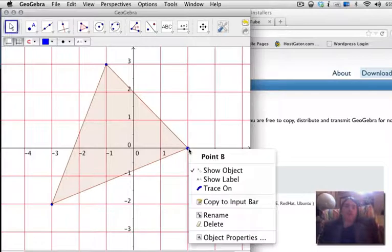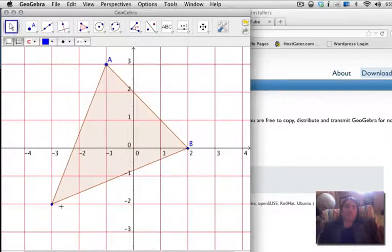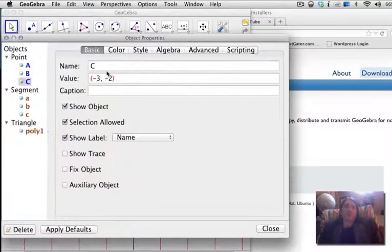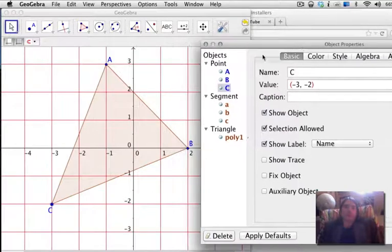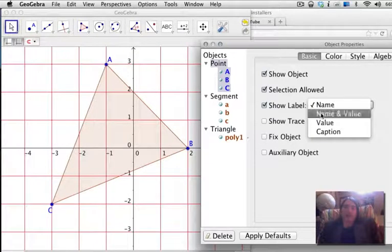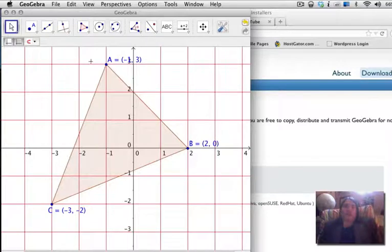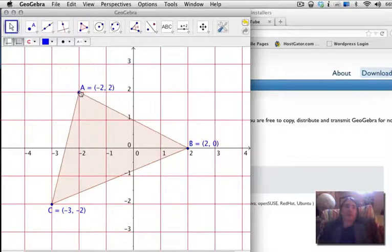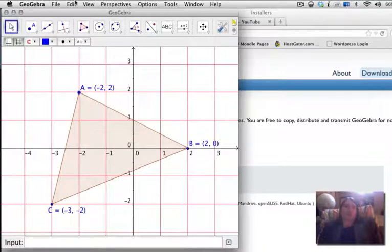I'm also going to right click on the points and show a label for each. It's helpful for me to include not only the labels, but also the coordinates for these points. So I'm going to go to Edit Object Properties by selecting all of the points and showing the label with a name and value. You'll notice that now the points are labeled not only by a name, but also by a coordinate. This sketch looks reasonable for me, for my purposes.